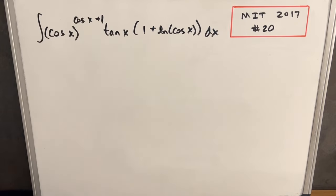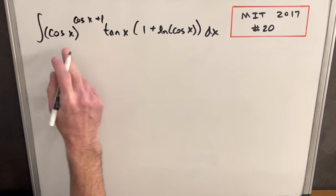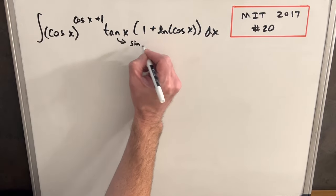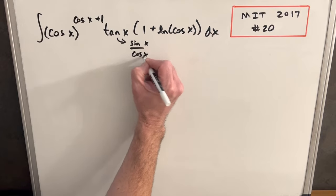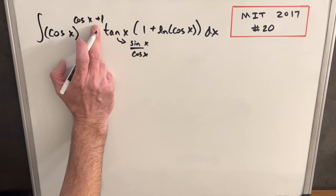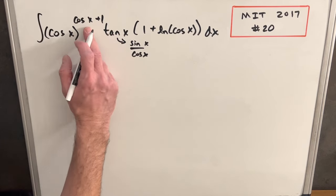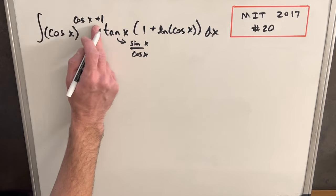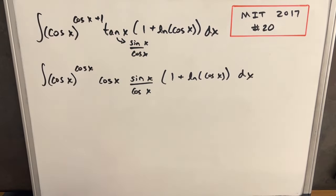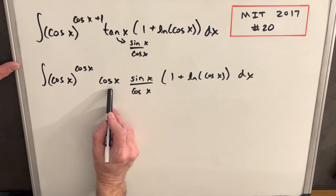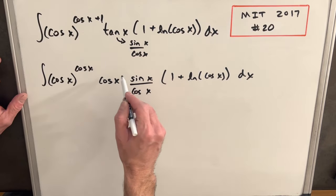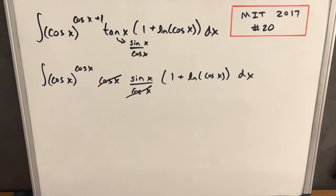I'm going to rewrite this a little bit. We have a lot of cosines, so I want to break this tangent into just sine x over cosine x and rewrite it that way. You'll notice on this cosine we can rewrite this exponent — this addition can be written as multiplication, so we can take a cosine x out of this expression. Our 1 comes down as this other cosine, and with tan written as sine x over cos x, we can do a cancellation of these two cosines.